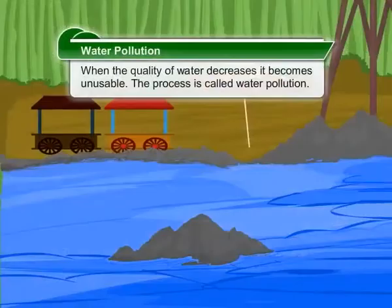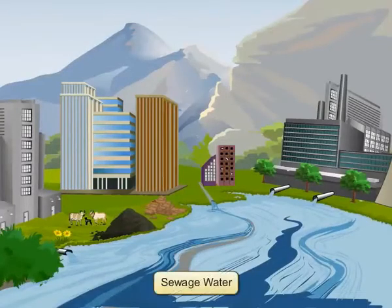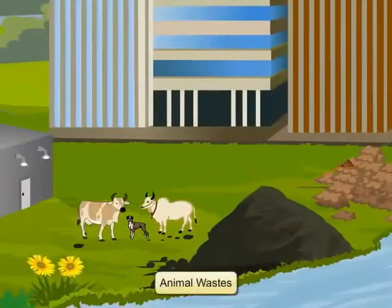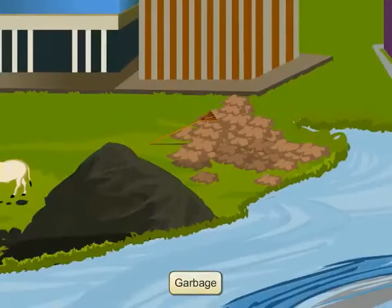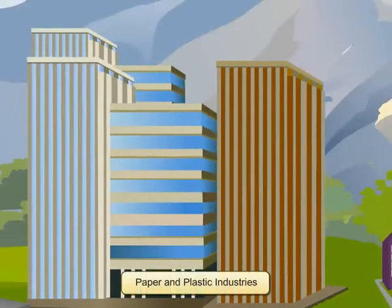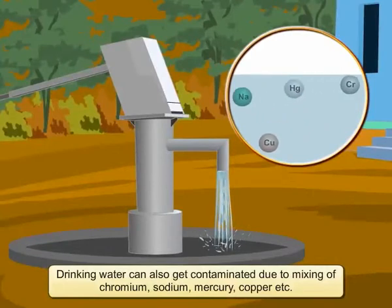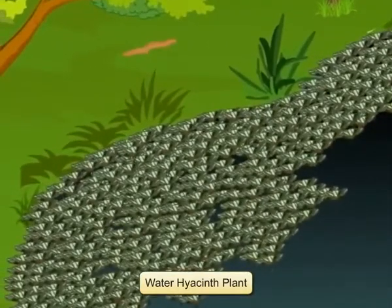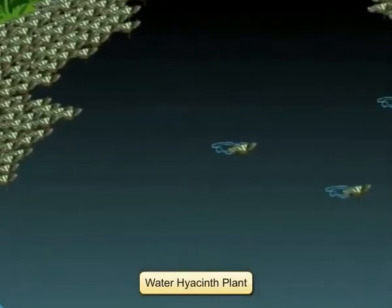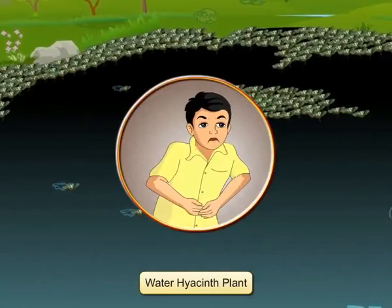When the quality of water decreases, it becomes unusable — this process is called water pollution. Water gets contaminated by sewage water, industrial water, animal wastes, wastewater from sugar factories, fertilizers, garbage, and paper and plastic industries. Drinking water can also get contaminated by chromium, sodium, mercury, copper, etc. When the water hyacinth plant spreads over water bodies, the percentage of oxygen falls, water becomes black, and if mixed with drinking water, it leads to the spread of diseases.